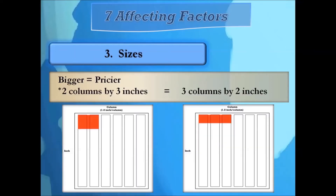Size is pretty self-explanatory, although I'll add that two columns by three inches is the same as three columns by two inches — they both have a sum of six column inches but with a different shape.